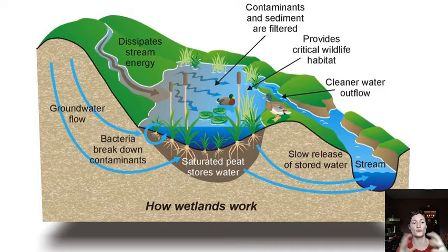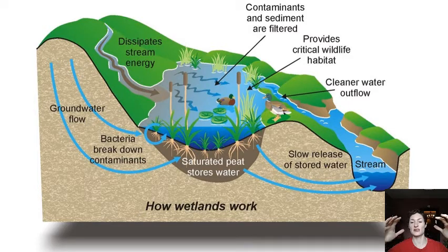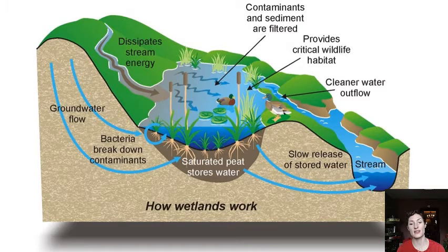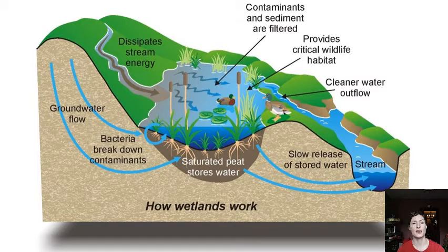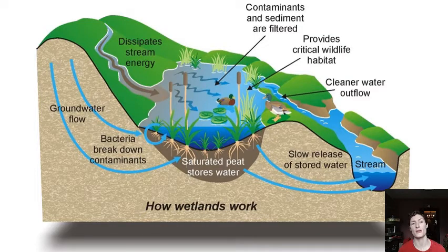In the wetland, you have cattails and water lilies whose roots dangle into the water and help slow the flow. As the water slows, solid particulates can settle out — that sedimentation clears cloudy water. The plants and, importantly, the microbes in this ecosystem absorb a lot of the dissolved nutrients that could be considered contaminants. Microbes can take up those nutrients and change them into something that isn't bioactive, so other organisms can't take it up, or into a form that is no longer a problem.